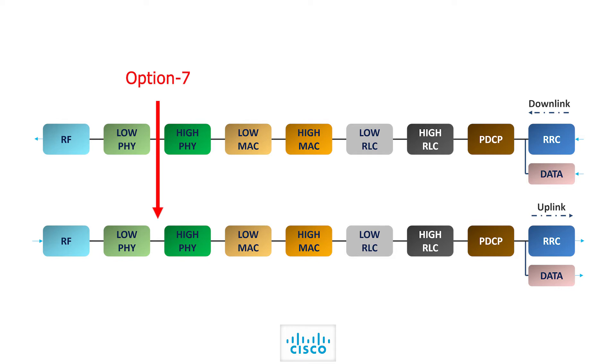Split option 7, or intra-PHY split, is when part of the physical layer functions and RF are in the DU and RU while the upper layers are in the central unit. And finally, split option 8 is where all functions are implemented in the CU other than RF.